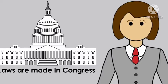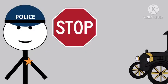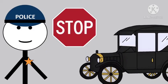Obeying the law — laws are created to keep citizens safe and maintain order in the society. Obeying laws contributes to the peace and safety of the community. For example, laws stating that cars should stop at red lights are important because they help to prevent accidents and keep road users safe.